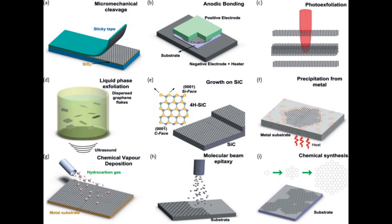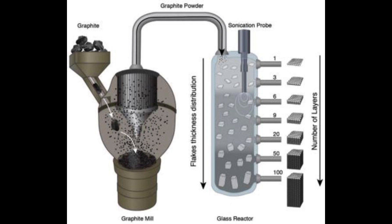Mechanical exfoliation — the scotch tape method. This was the first method used to isolate graphene and earned Andre Geim and Konstantin Novoselov the Nobel Prize in Physics in 2010. It involves using adhesive tape to peel off layers of graphene from a piece of graphite. While it produces high-quality graphene, it's not suitable for large-scale production.